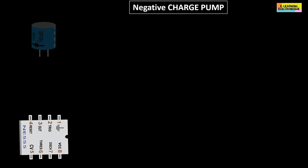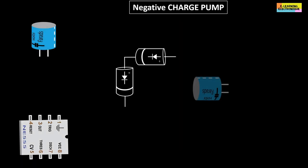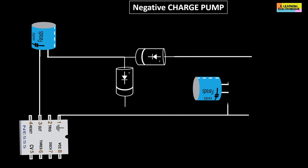It is possible with the charge pump circuit to obtain a voltage that is the opposite of the input voltage, that is, a negative voltage. It is necessary to invert the direction of the diodes and capacitors to change the direction of their polarity and wire the circuit according to this diagram.